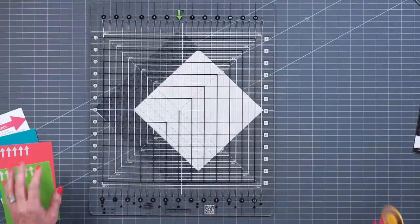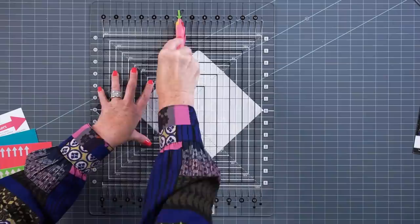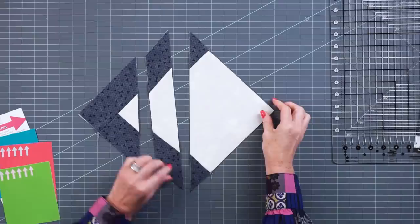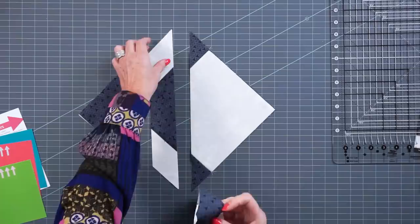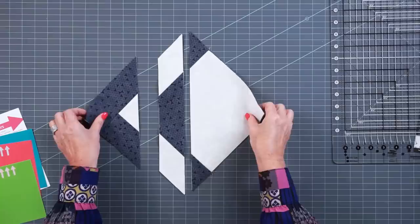So now we're just going to make two cuts through that stack. Now we have these units in three pieces. All we're going to do here is swap the middle pieces and sew these guys back together.